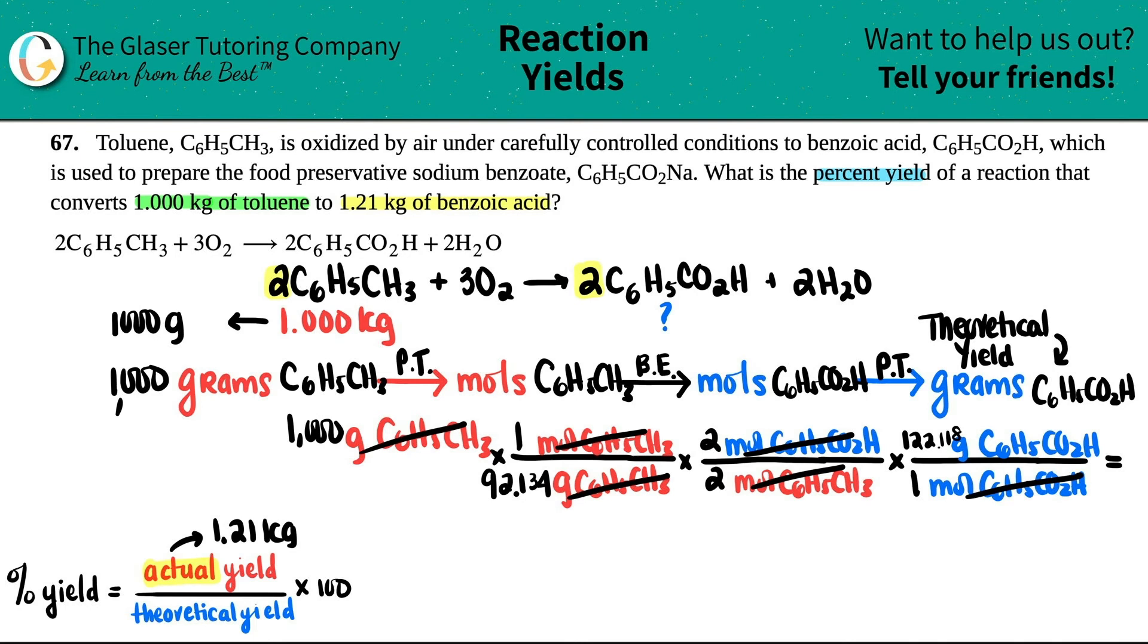So mole of C6H5CO2H on the bottom, gram of C6H5CO2H on the top. And this is the periodic table again, because it's a gram to mole conversion of the same compound. One mole, if you're using the periodic table, it's always one mole.